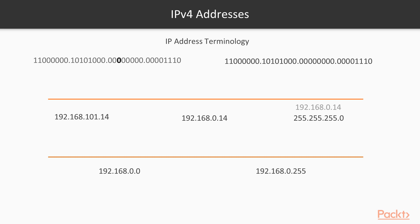Before we get too much further into IP addressing, let's look at some terminology we'll use while describing IP addresses and networking. First, we have a bit — a single position value of a 1 or 0 within our binary address. Then we have a byte, which is an 8-bit number represented in binary form, making up one of four blocks within our dotted IP address. An octet is just a different representation of our byte, represented in decimal form — the name we give one of the four blocks of our IP address.